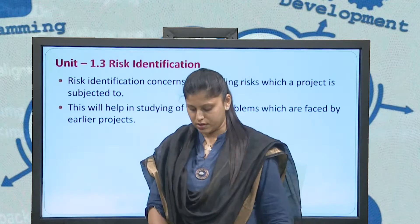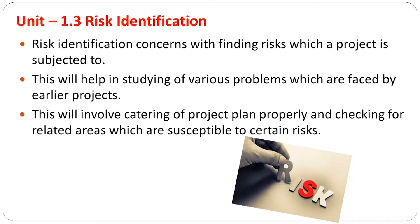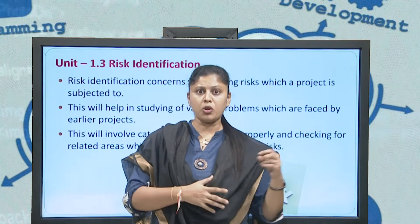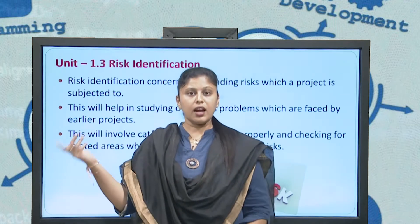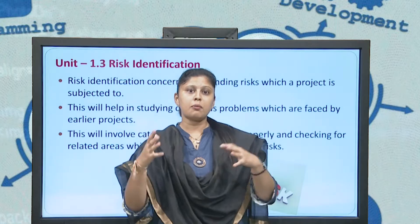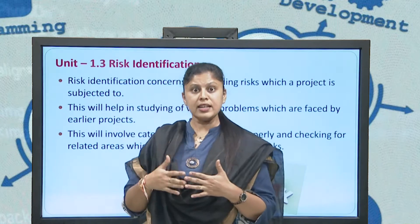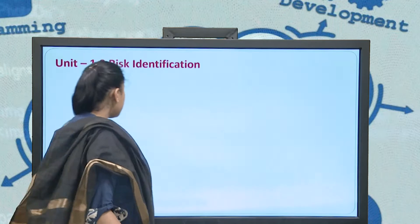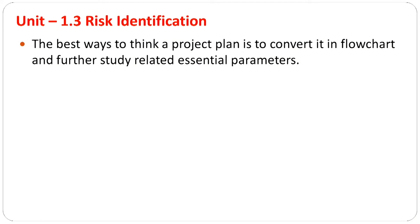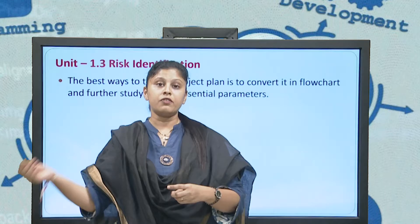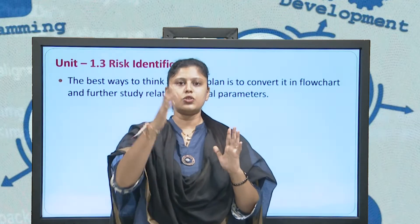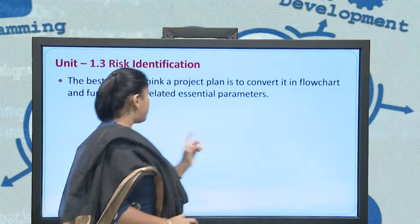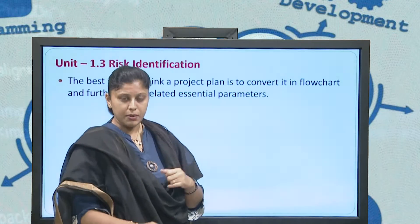We will try to avoid those risks because we know that in earlier projects we already had such risks. This involves catering to the project plan properly and checking for related areas which are susceptible to certain risks. We have to properly check what things were there and what risks were associated with earlier projects. It requires a huge amount of project planning, understanding of the project, and understanding the risks associated with the upcoming project. The best way is to convert the project plan into a flow chart to further study the related initial parameters.